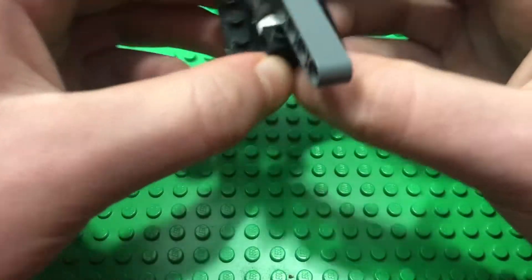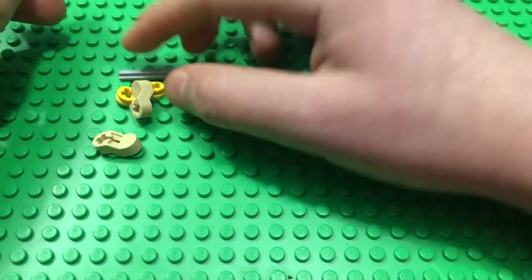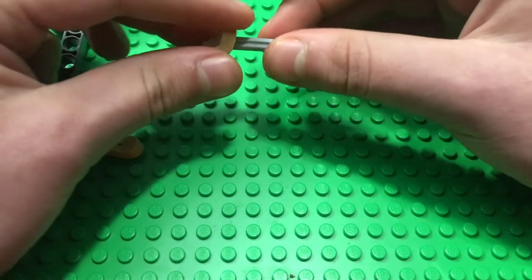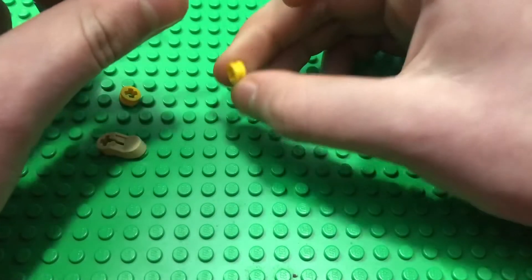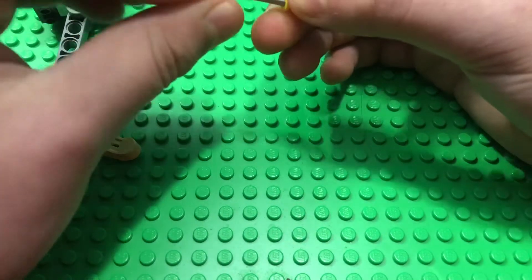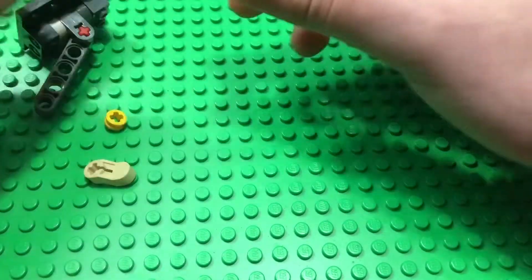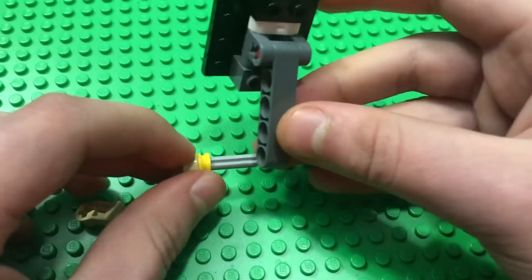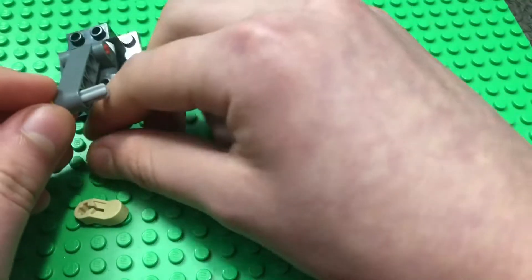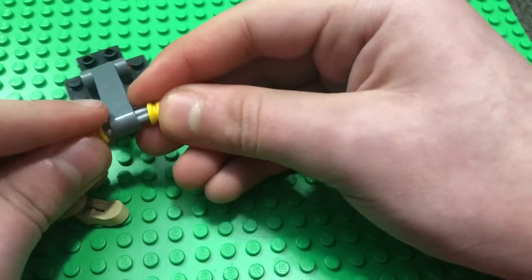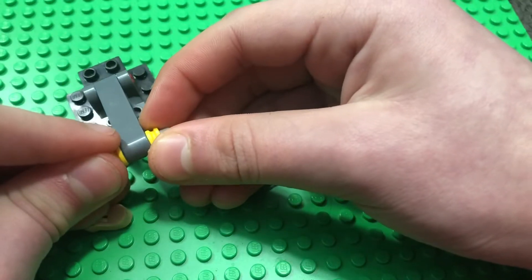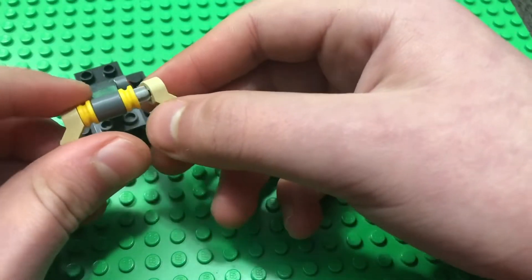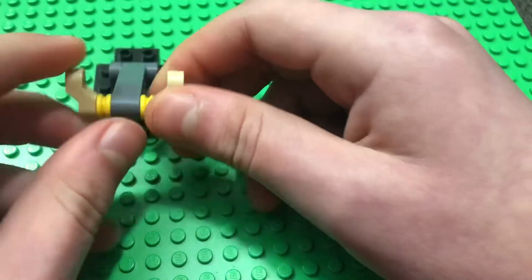Then you're also going to take the four by four base plate and put it on the top like that. Now we have to do the crankshaft. That will be using a three long axle with a crankshaft piece on the end like this. Take a half stud bushing and put it all the way down, thread it through like that. Then you want to take your piston itself and put it through just like that.